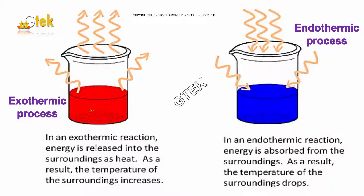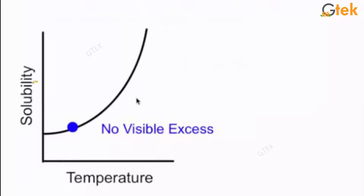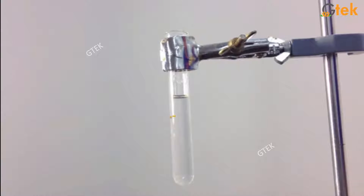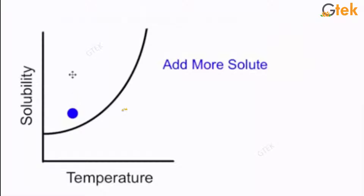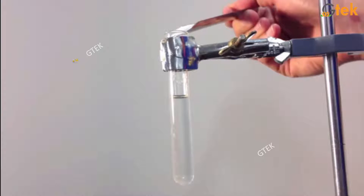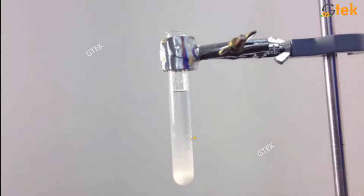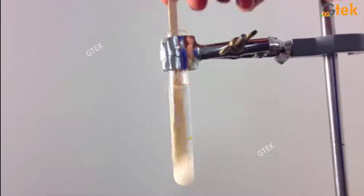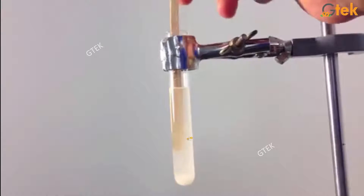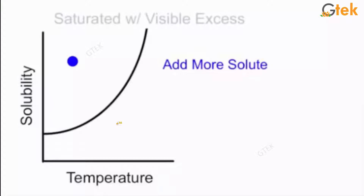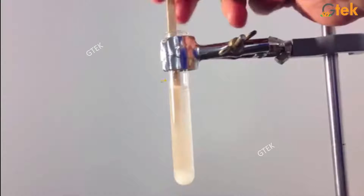In an exothermic reaction, energy is released; in an endothermic reaction, energy is absorbed. Here is a chart showing the relationship between solubility and temperature. I am adding more solute and the solubility is increasing. I am mixing it rigorously so that the solute and solvent get mixed up to form the solution — this is referred to as a saturated solution.